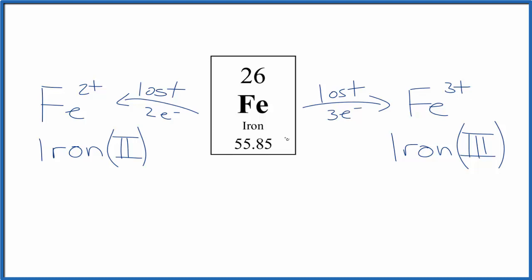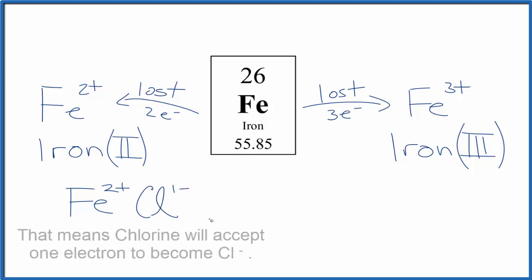So you might ask, where did we lose these two? If you think about it, you could have iron, and it loses two electrons, and it loses them to another atom, like chlorine. Chlorine has a one minus ionic charge. So these two electrons, we'd need two chlorine atoms, would be lost to the two chlorines. The charge would balance. We'd have FeCl2. We call that iron two chloride.